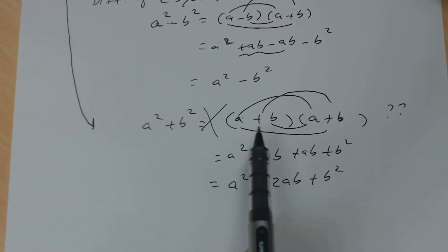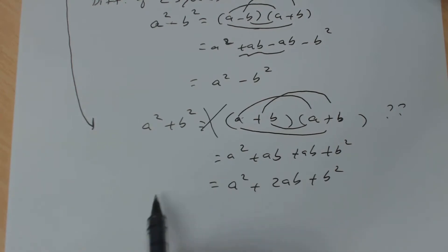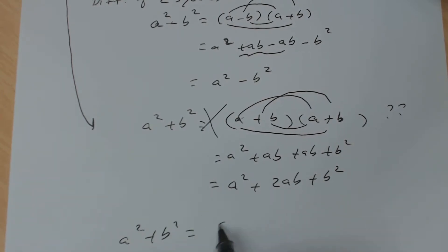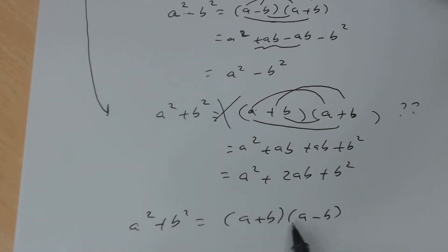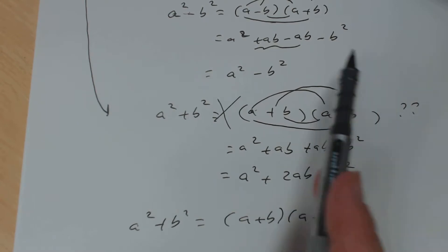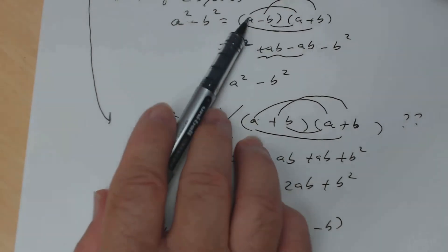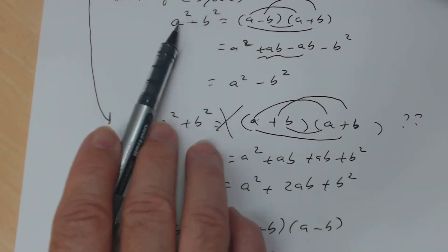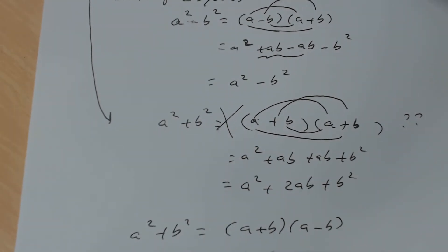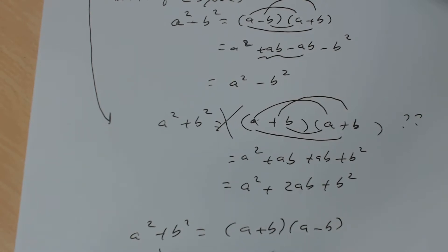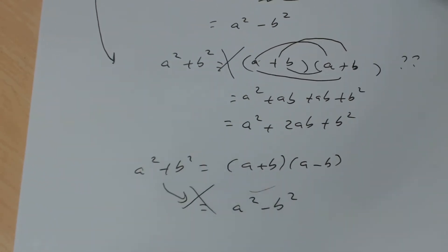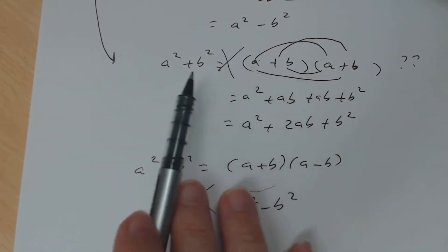You might ask: what if you factored it as (a + b)(a - b)? That won't work either, because that's the factorization for the difference of two squares. If you FOIL it out, you end up with a² - b², which is not a² + b².